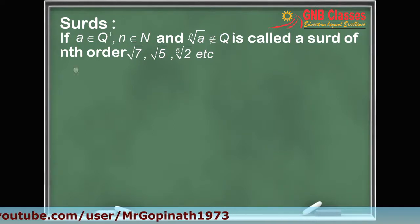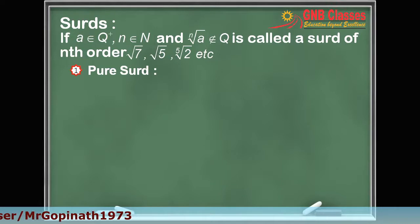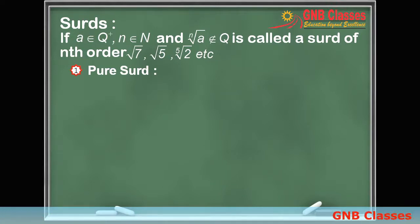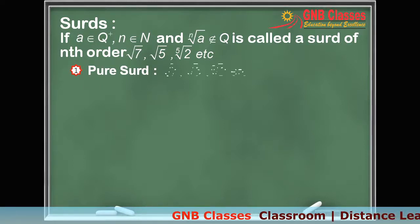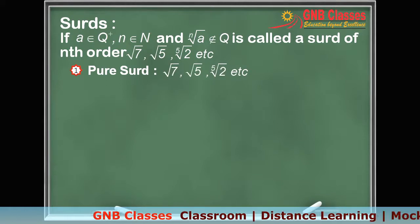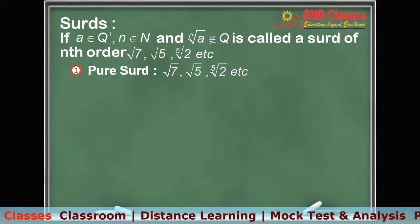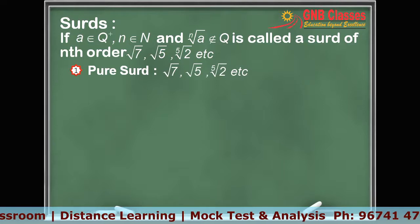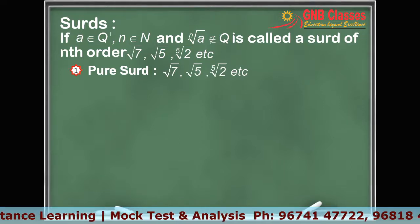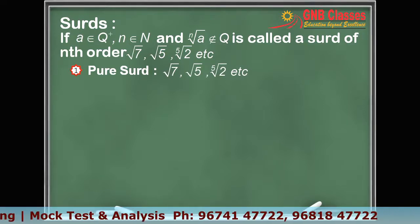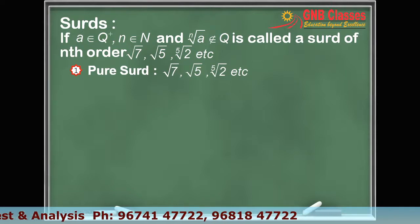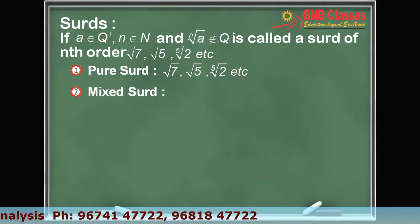The first kind is a pure surd. A surd consisting of a single irrational number is called a pure surd. For example, root 7, root 5, and fifth root of 2 are all pure surds, because each consists of a single irrational number.